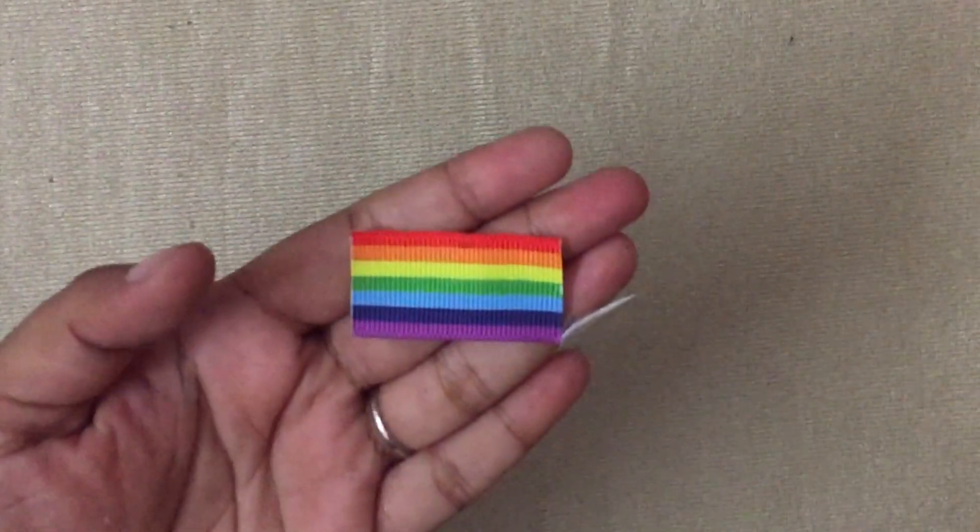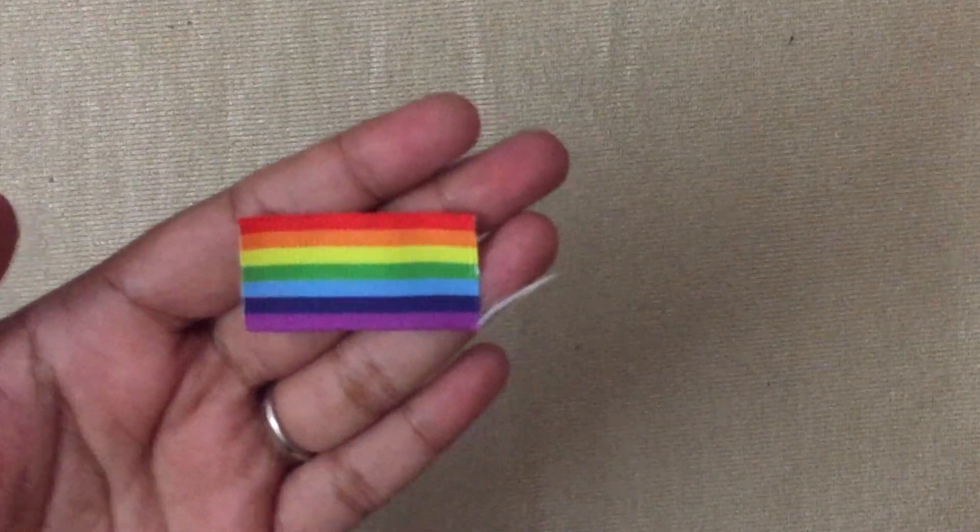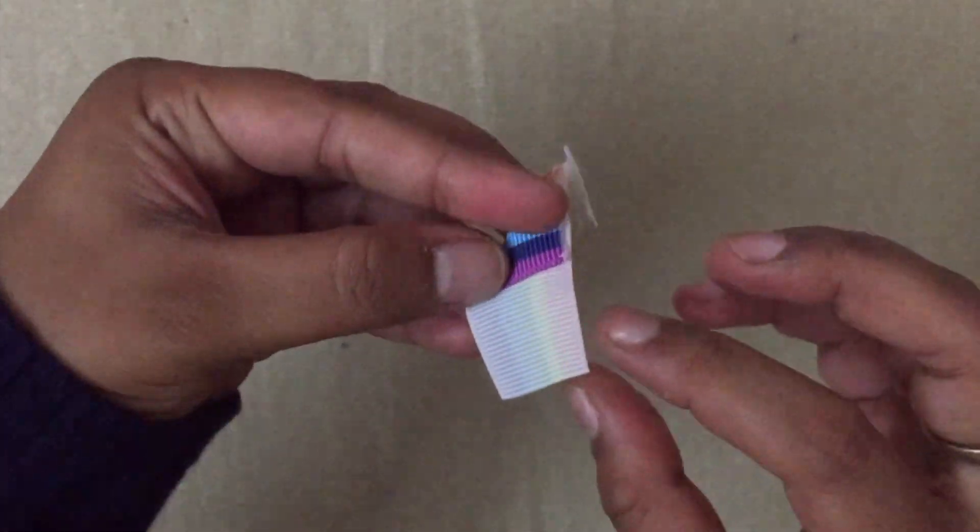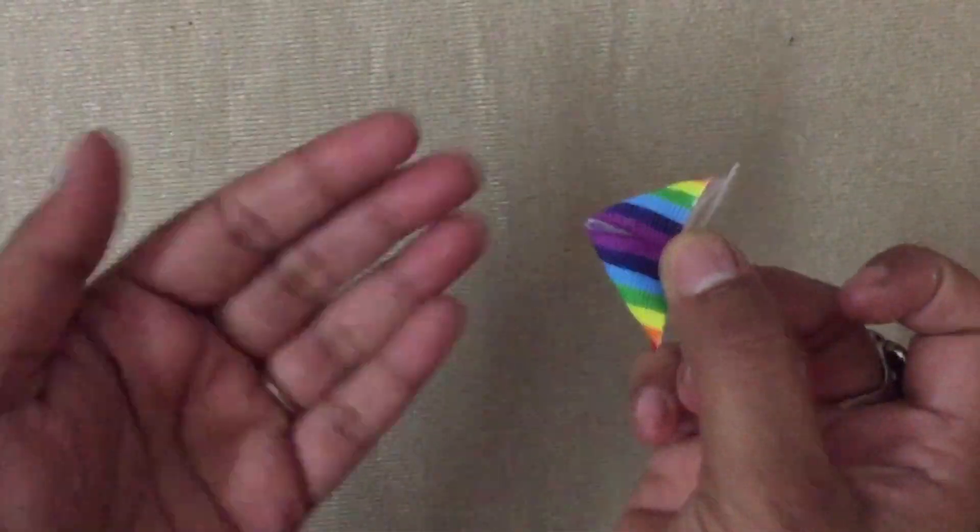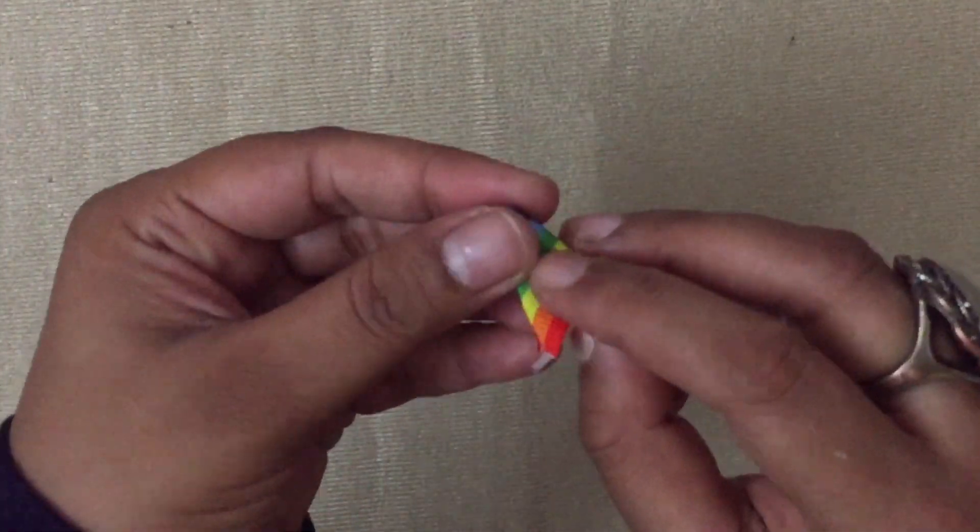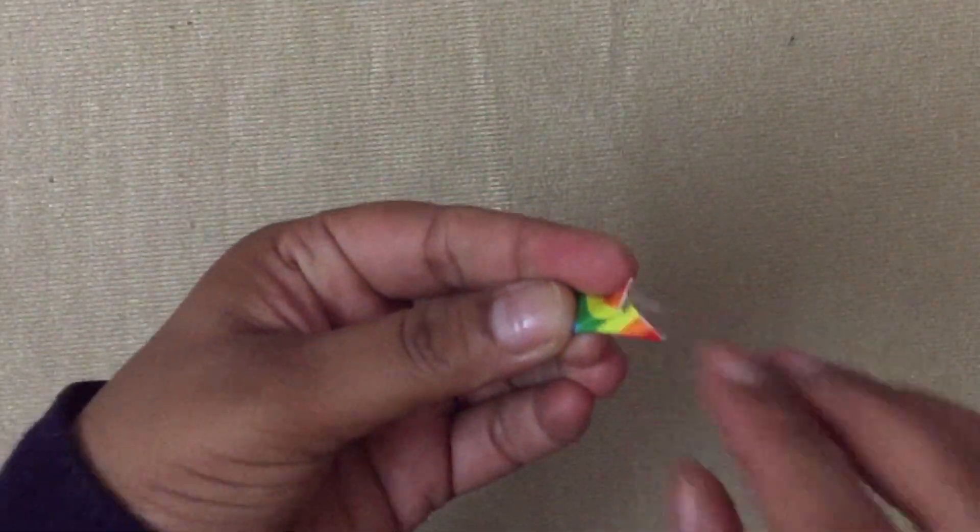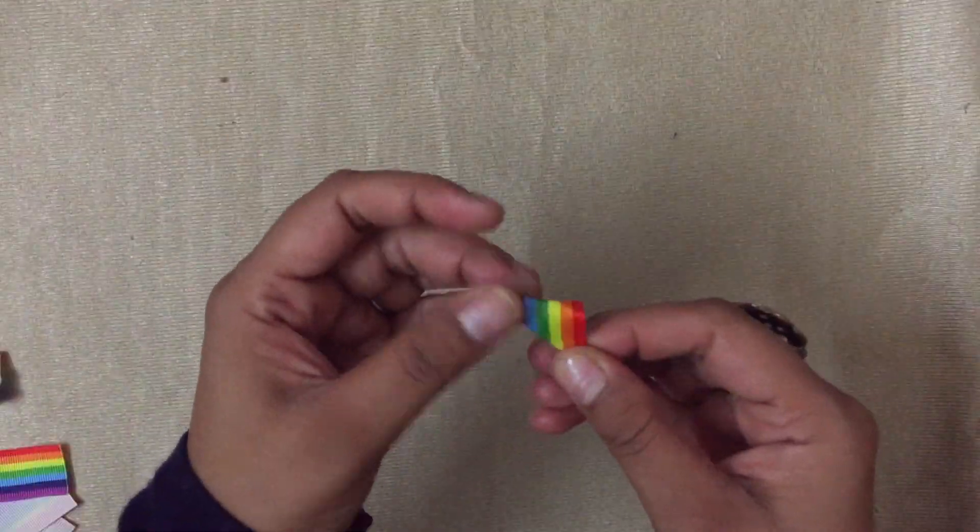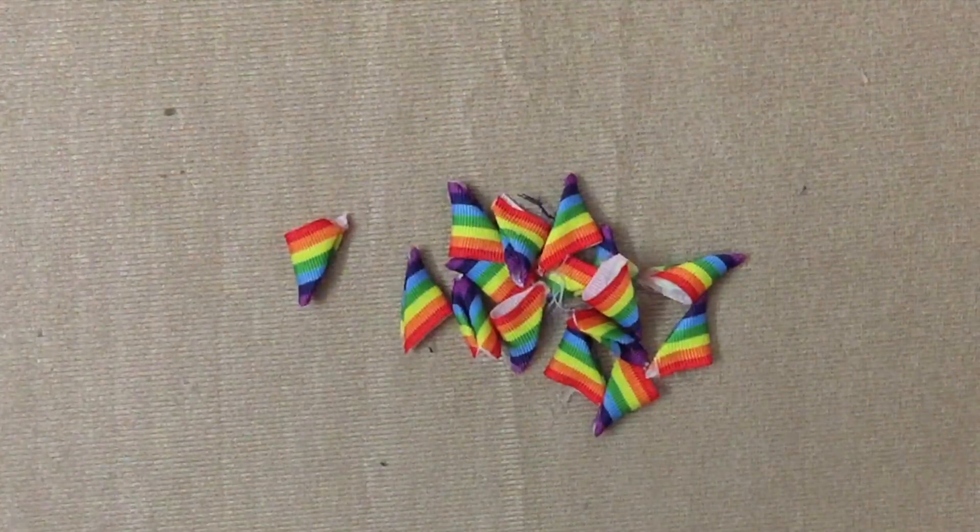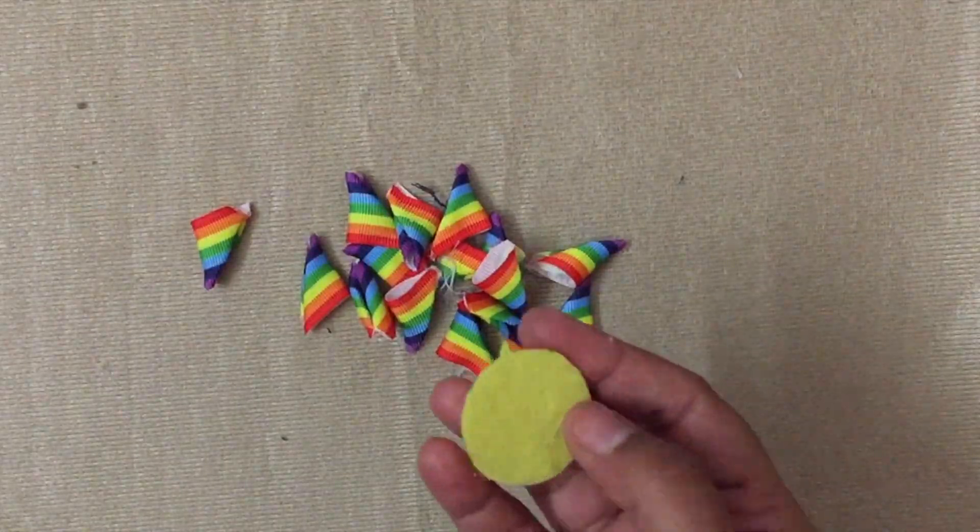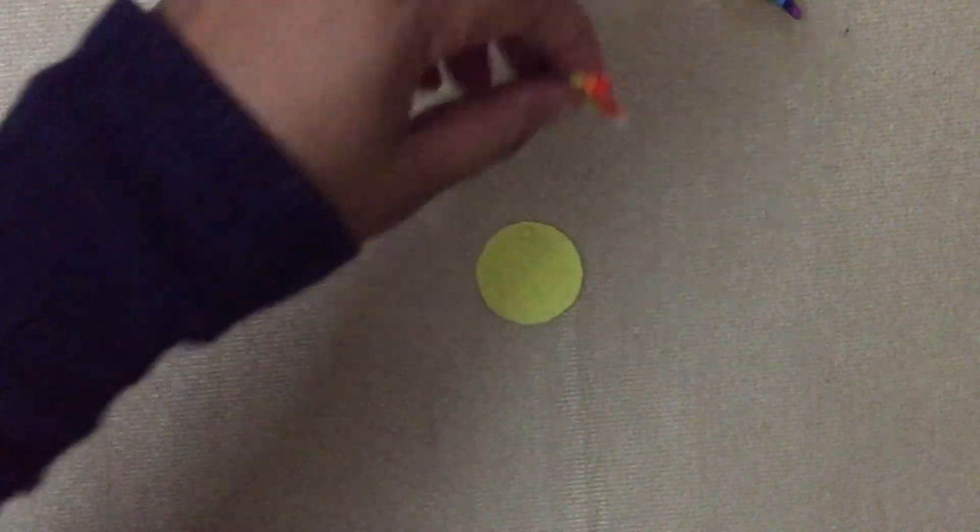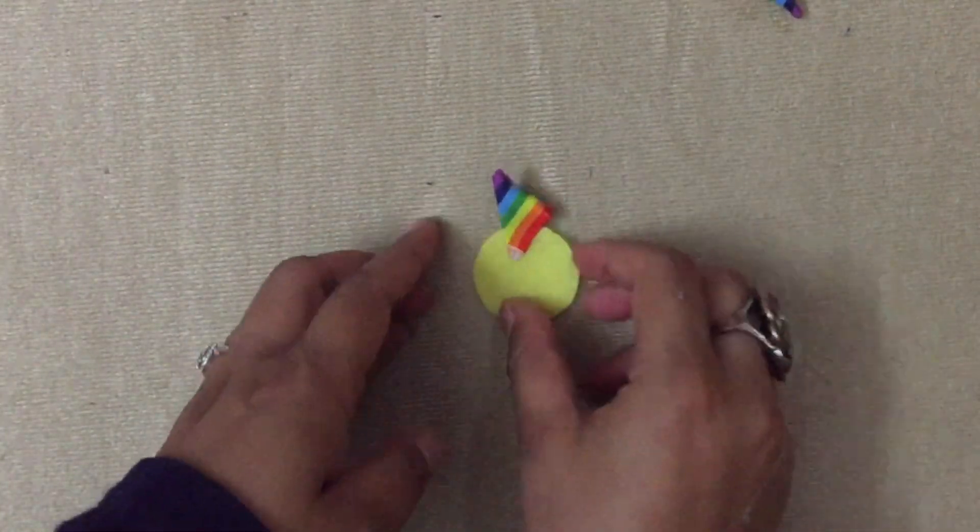To make the flower, first cut a piece of ribbon measuring four centimeters in length. Fold it like shown. To keep the petal in place, glue the edges like so. You need 14 of these pieces. Cut a felt circle measuring three centimeters in diameter for the base of the flower.